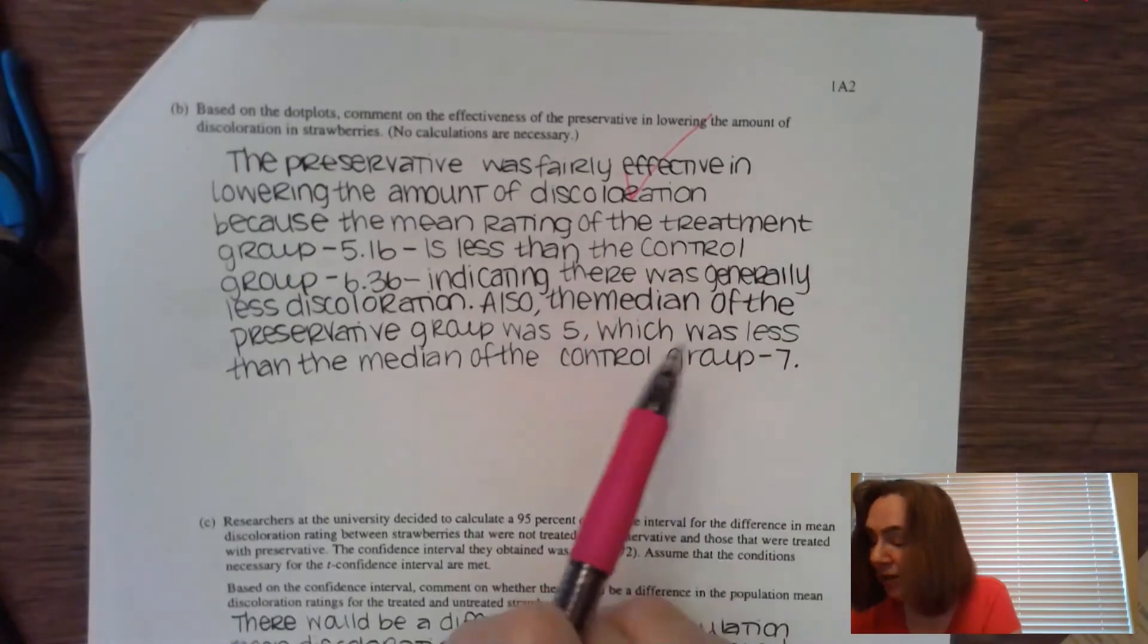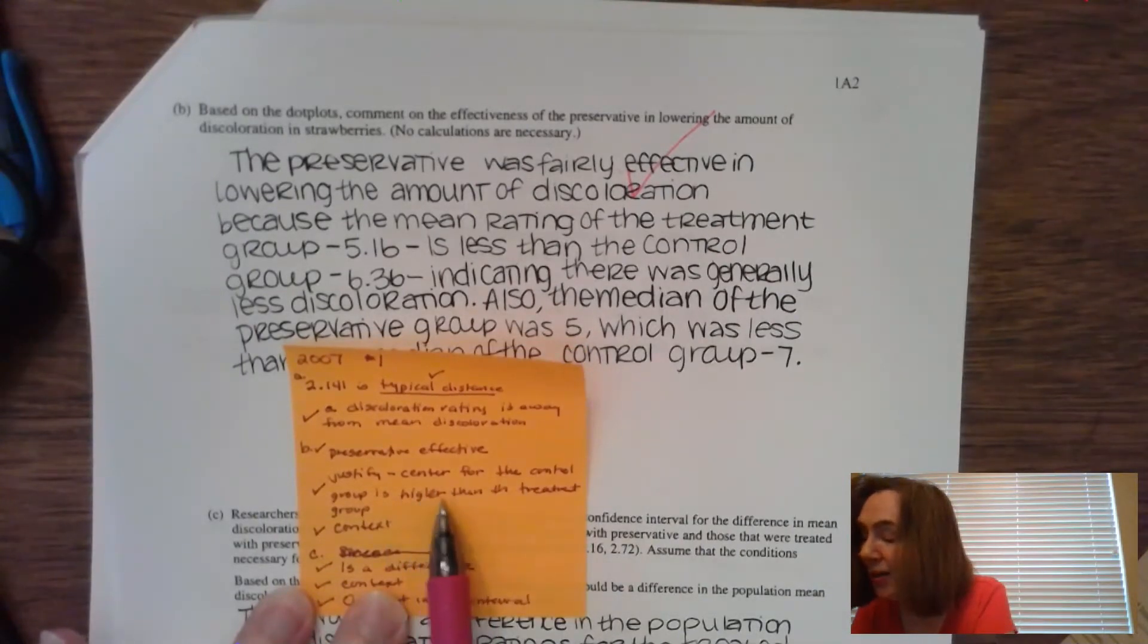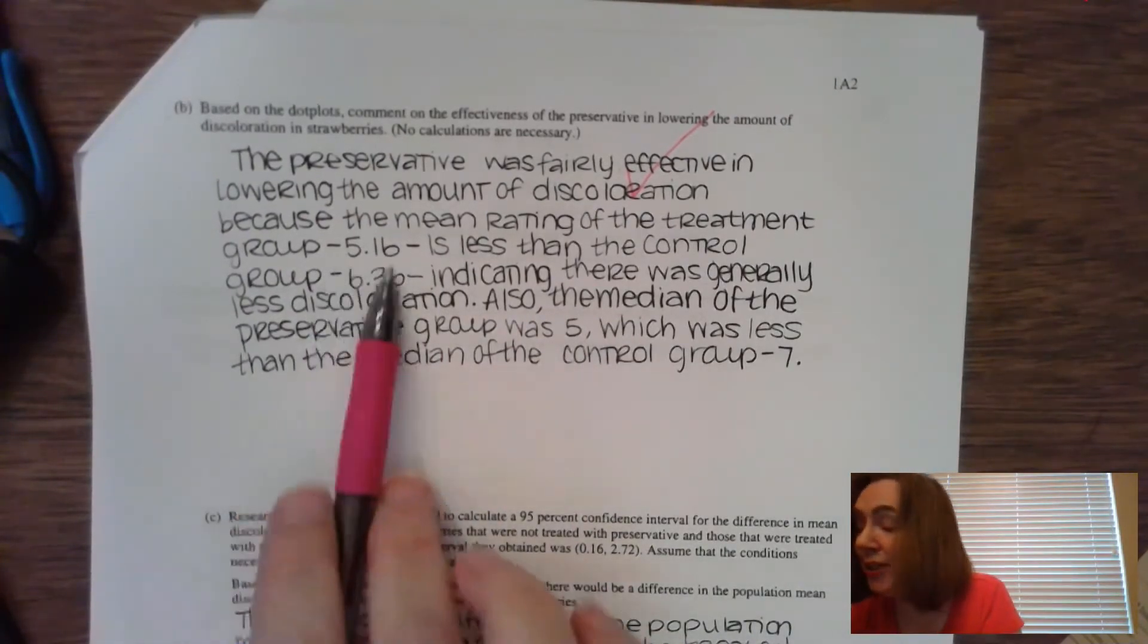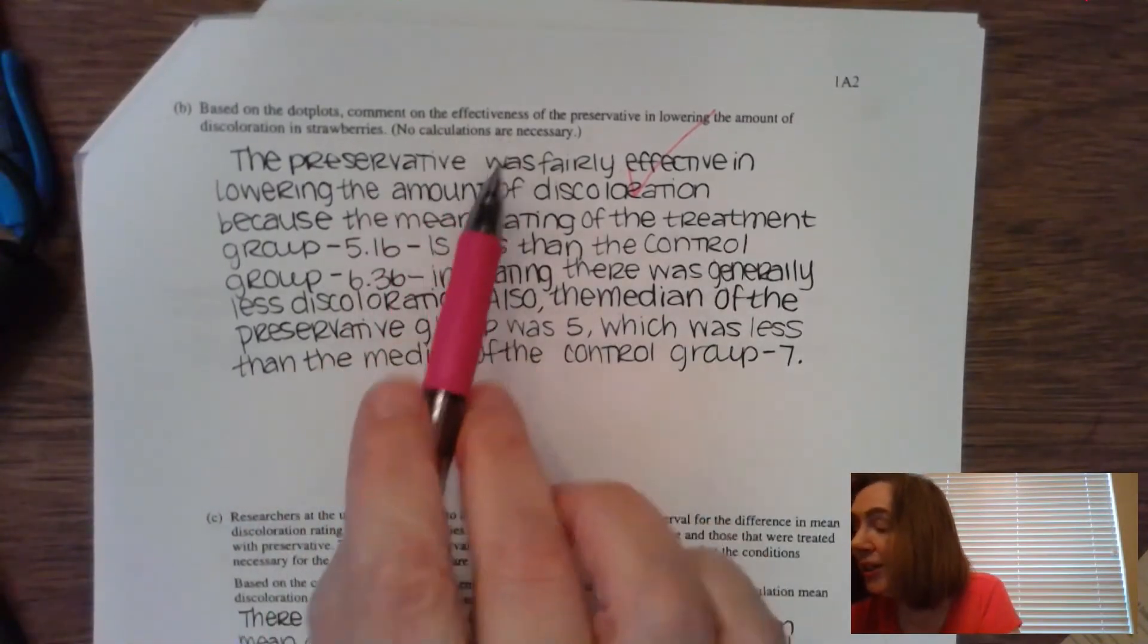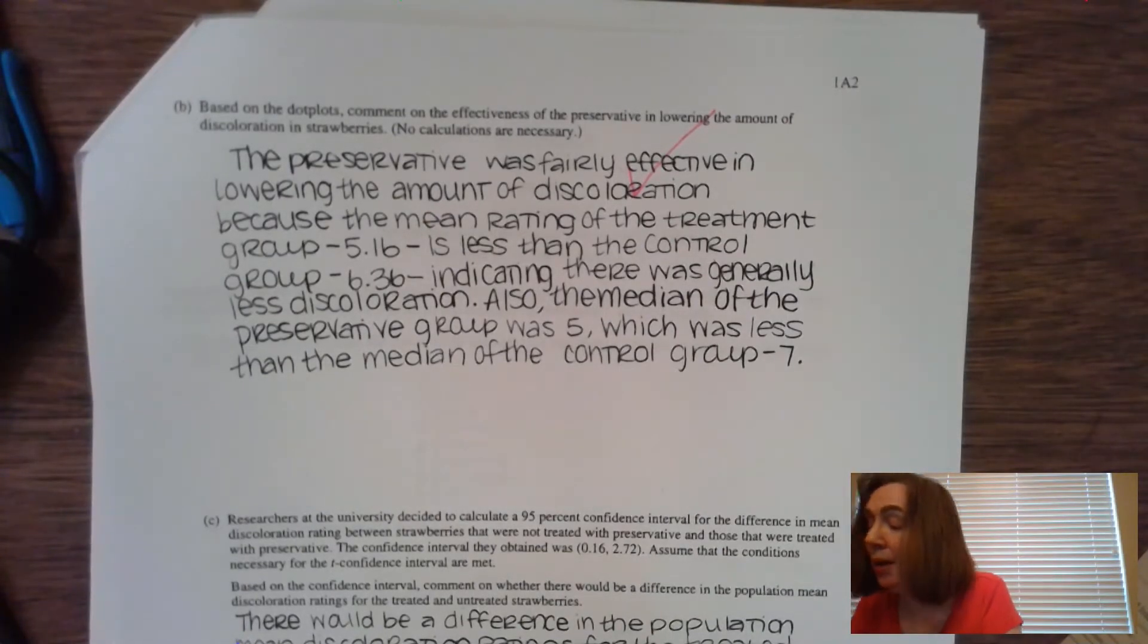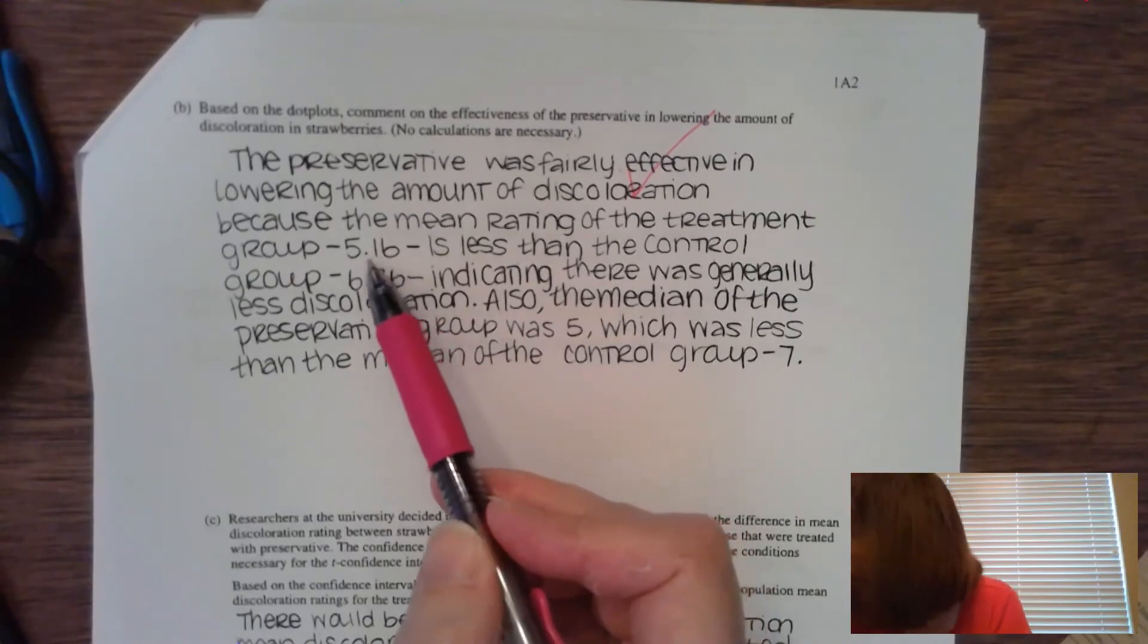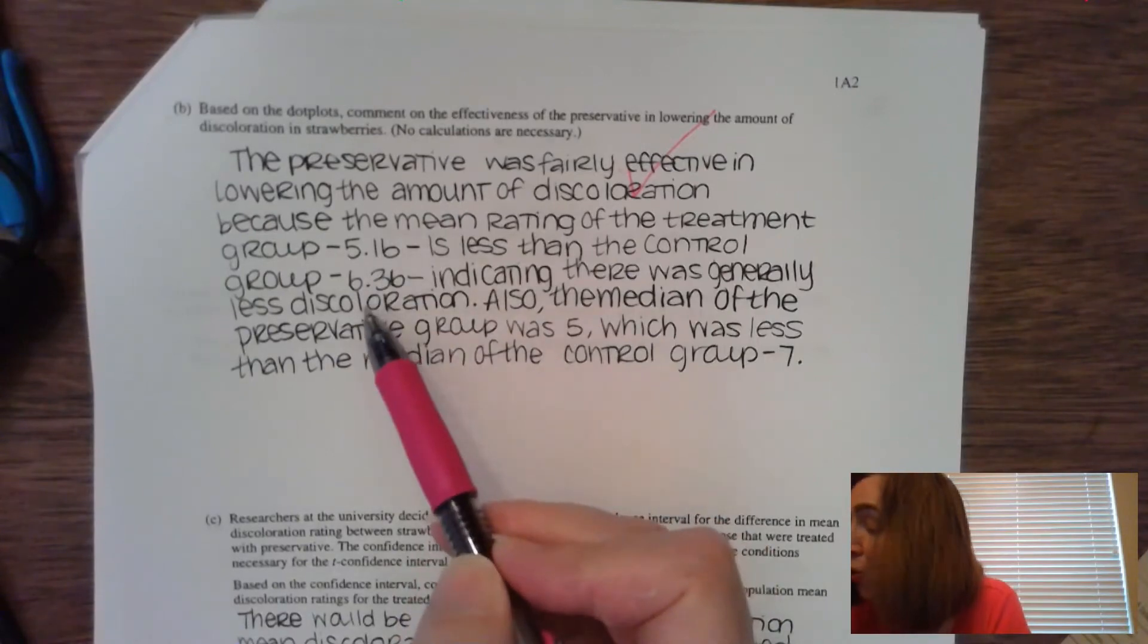And probably the best answer for this, statistically speaking, is to address the measure of center. It's not asking you to discuss the whole thing. It's to recognize that the center for the control group is actually higher than for the treatment group. So if the center is higher for the control, it is actually more discolored. And therefore we can see that the preservative that you're using is helping to control the discoloration in those strawberries. So what I'm looking for here is making sure you address the concept of the center. The center for the control group is higher than that of the treatment group. And so in this particular person, they identified the means.